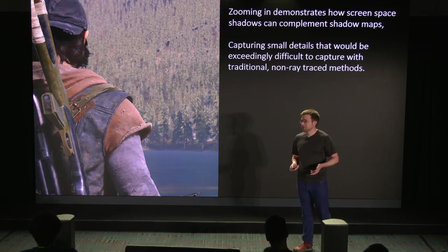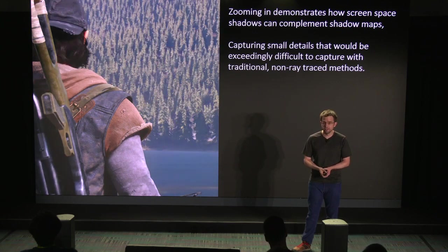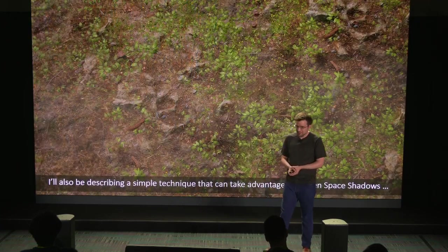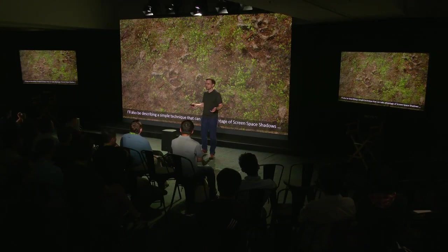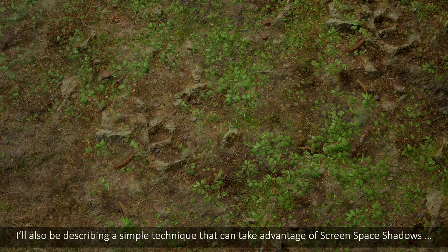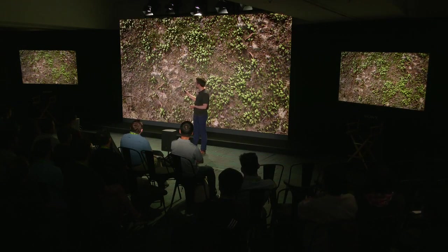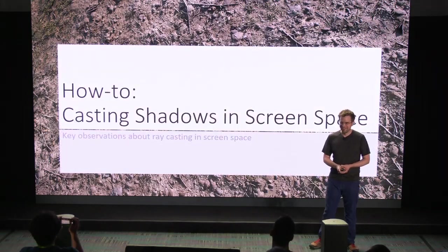In certain games where ray tracing isn't quite feasible yet at these scales, it's a very useful technique. Additionally, one unexpected benefit of having a robust screen space shadow system: you may know what a typical in-game material looks like lit with a single light direction — it all looks a bit flat. Later in this presentation, I'm also going to show you a simple technique that can exploit screen space shadows to make materials look significantly better, pulling out a lot of detail.